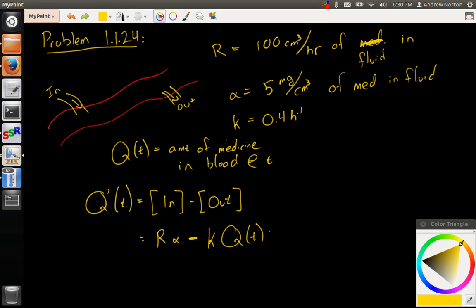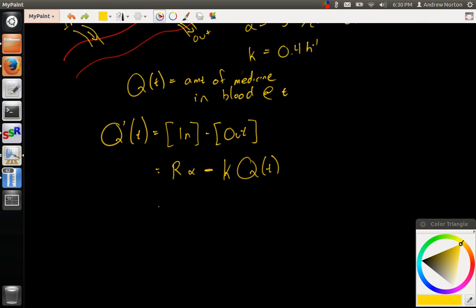So we get to plug in our values to our differential equation. They tell me my rate is 100 centimeters cubed per hour. My alpha of mine density is 5 milligrams per centimeter cubed. So those would actually cancel. I'm left with milligrams per hour. Minus my K is 0.4 over hours. And then that times Q of T.